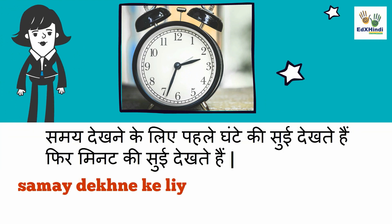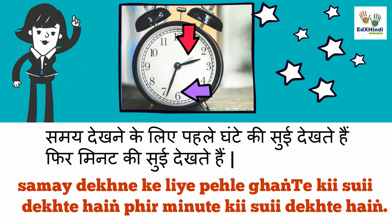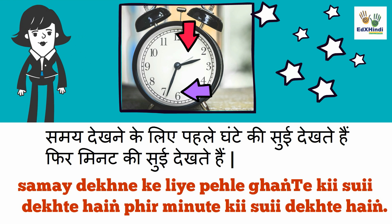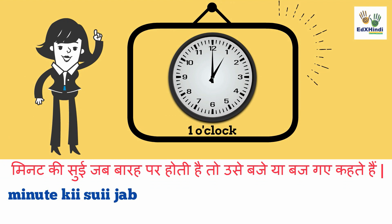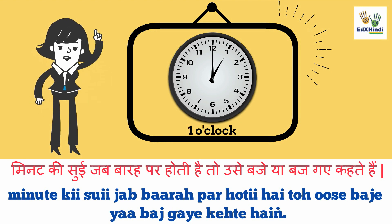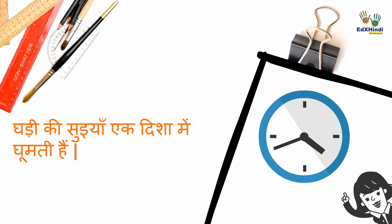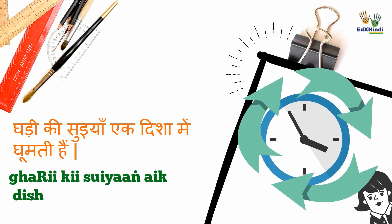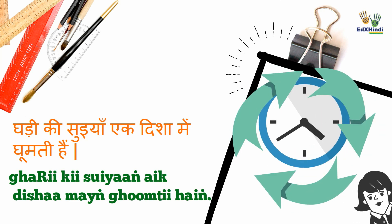Samay dekhne ke liye pehle ghante ki sui dekhte hai, phir minute ki sui dekhte hai. In order to see the time, we first look at the hour hand and then the minute hand. Minute ki sui jab barah par hoti hai, toh usay baje ya bajgay kehte hai. When the minute hand touches 12, it stands for o'clock. Ghari ki suiyaan ek disha mein ghumti hai. The hands of the clock move in one direction.